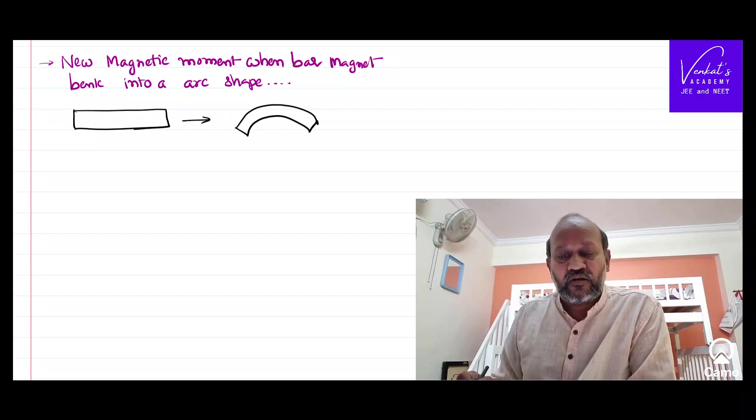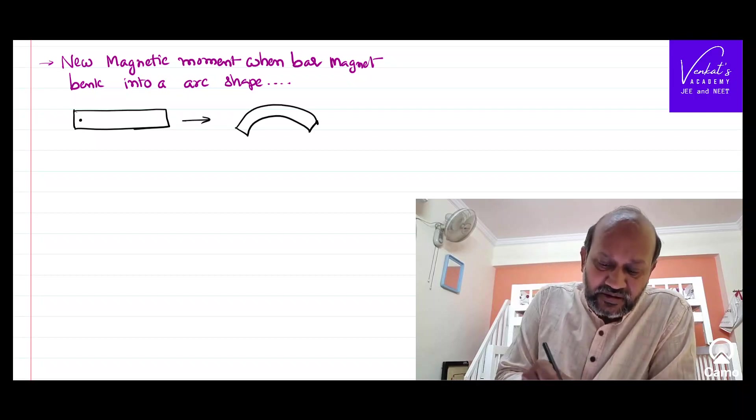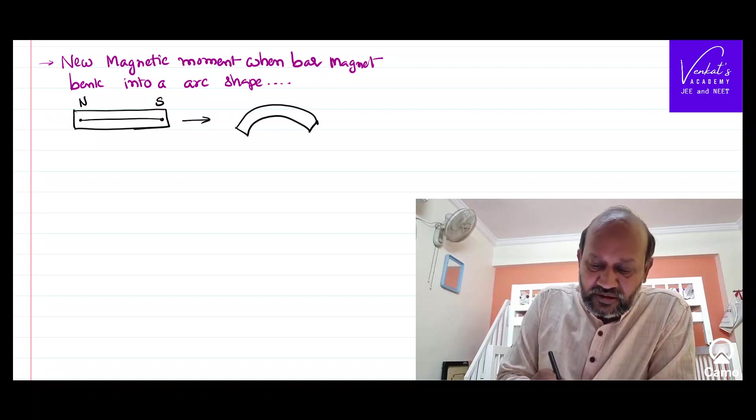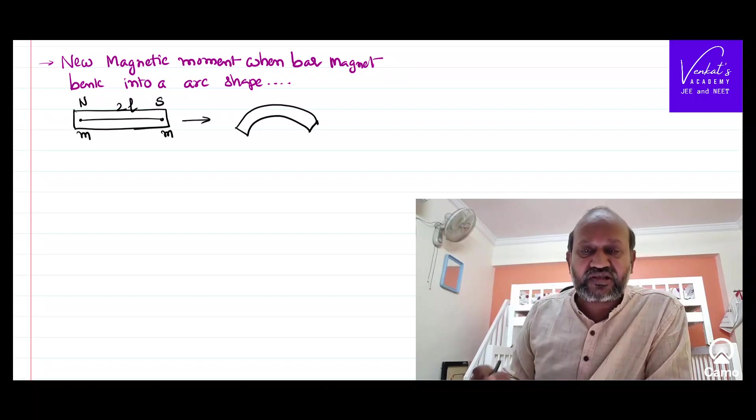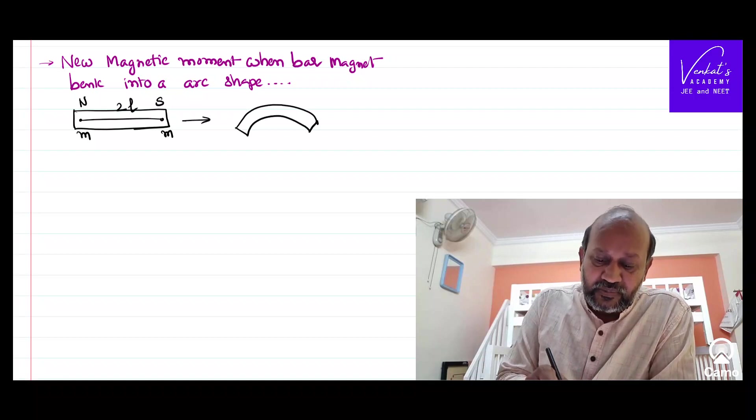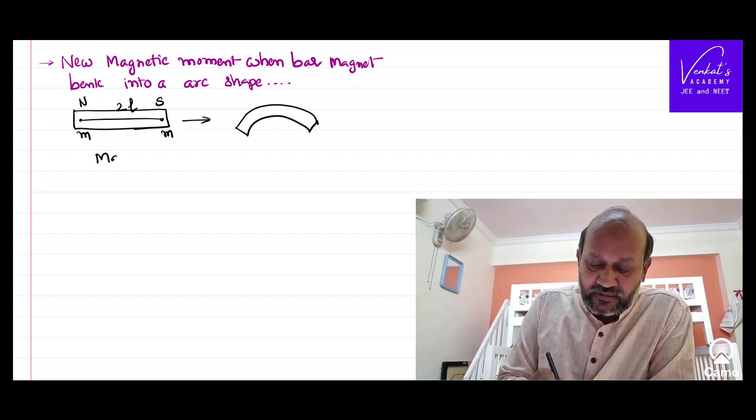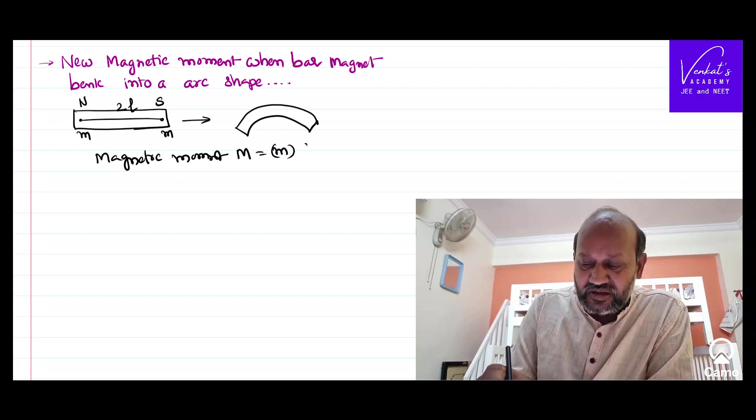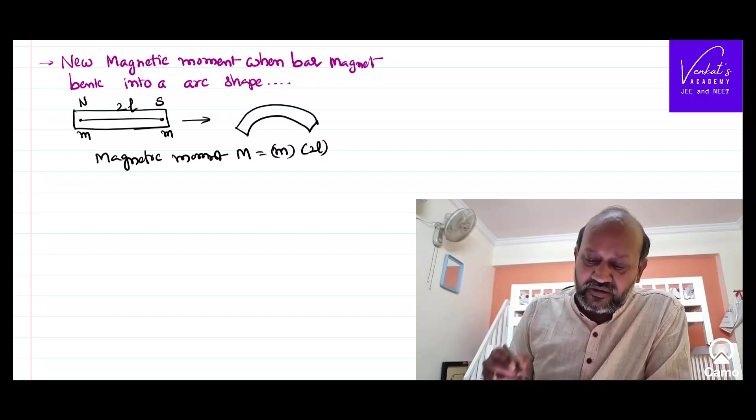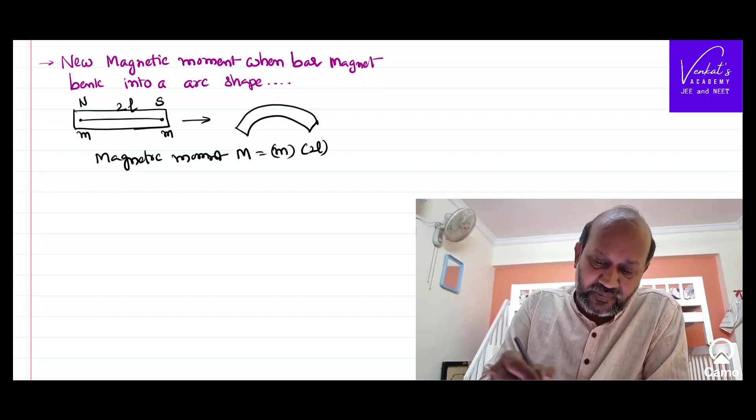So first of all, what's the magnetic moment? If this is a north pole, this is a south pole, distance between them is called length of the bar magnet. Each pole will have its strength, pole strength m and m. Then the magnetic moment of the bar magnet capital M can be expressed as a product of pole strength and the length of the magnet.